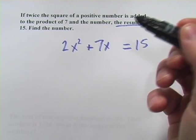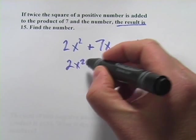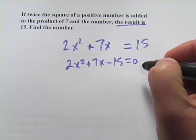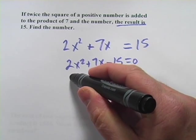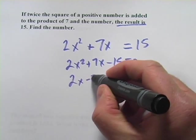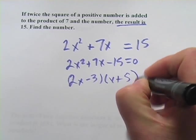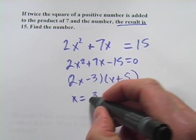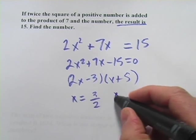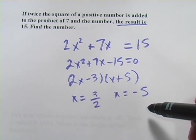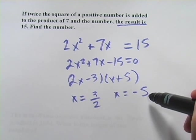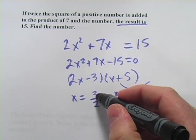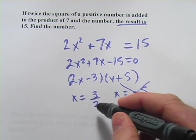So we've got 2x squared plus 7x minus 15 equals 0. And let's see. That factors to 2x minus 3 times x plus 5, I think. Yeah, that should work. And we get x equals 3 halves and x equals negative 5. We can toss out x equals negative 5, however, because it says twice the square of a positive number. That's a negative number, so we can toss it out. So it looks like our solution is 3 halves.